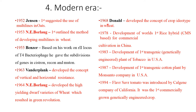In 1964, Borlaug developed the high-yielding dwarf variety of wheat, which resulted in the Green Revolution. Also in 1964, Donald developed the concept of crop ideotype in wheat. In 1978, the world's first rice hybrid based on cytoplasmic male sterility for commercial use was developed in China. In 1983, the first transgenic genetically engineered plant of tobacco was developed in the USA.